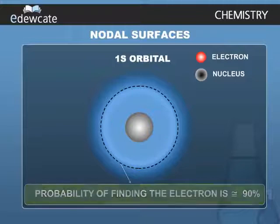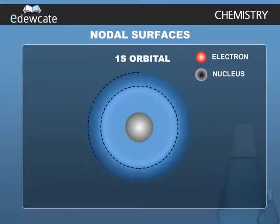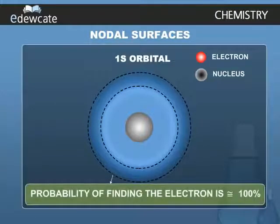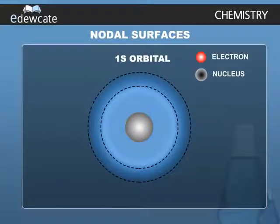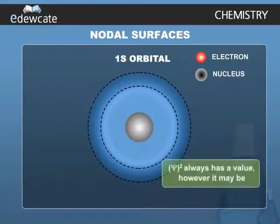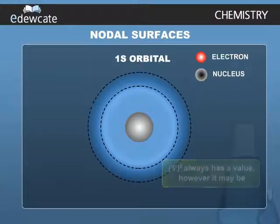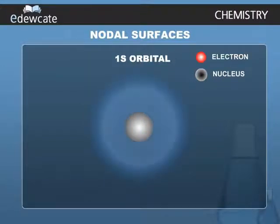One may ask, why do we not draw a boundary surface diagram which bounds a region in which the probability of finding the electron is 100%? The answer is that the probability density has always some value, however small it may be, at any finite distance from the nucleus.